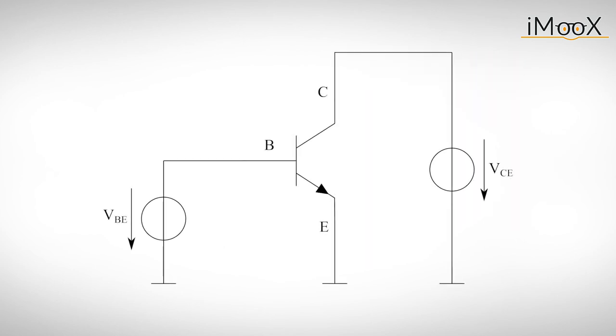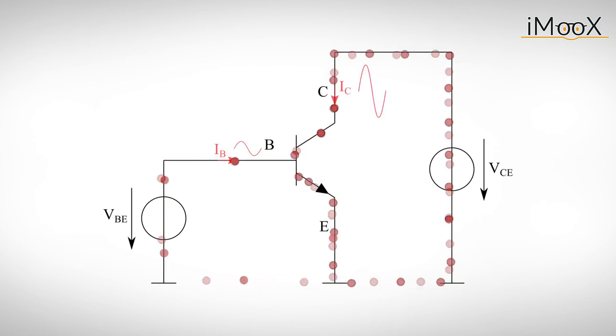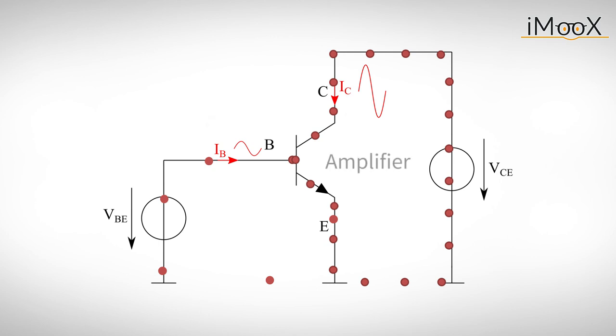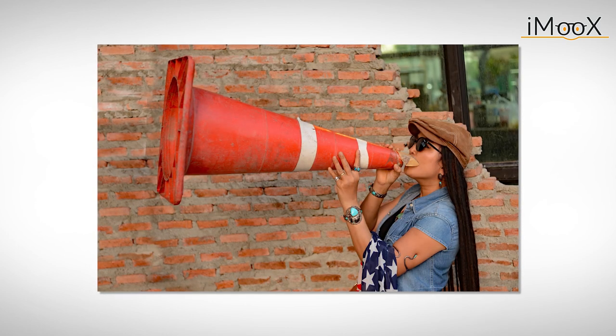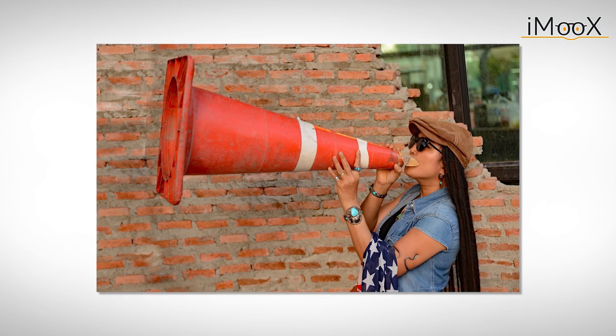If we build a circuit to operate the transistor in this configuration we can observe that the small current applied to the base leads to a large current between the collector and the emitter. If we now manipulate the base current in a certain range, the other current will change proportionally but with much higher amplitude. An amplifier is born, which much like a bullhorn can transform a small input signal into a large output signal.